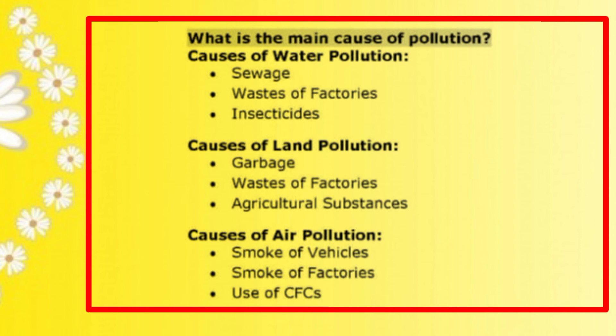Constructed response: What is the main cause of pollution? Answer: The three types of pollution are air pollution, water pollution, and land pollution. The main cause of water pollution is sewerage waste, factory waste, insecticides, and fertilizers. The main cause of land pollution is garbage, agricultural waste, and poisonous substances from factories. The main cause of air pollution is smoke from vehicles and industries.